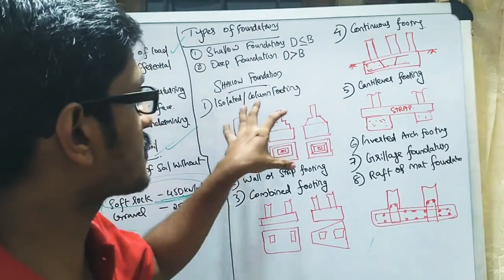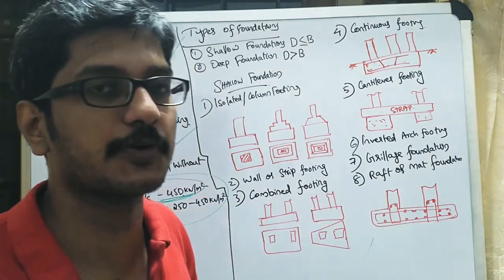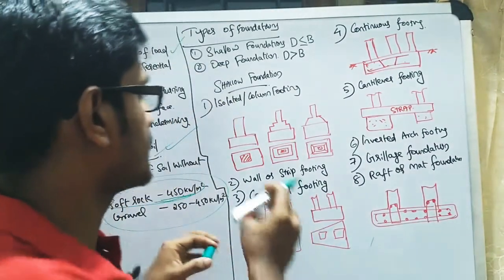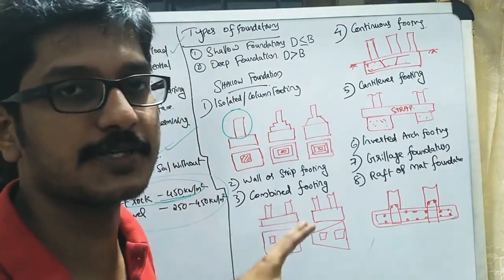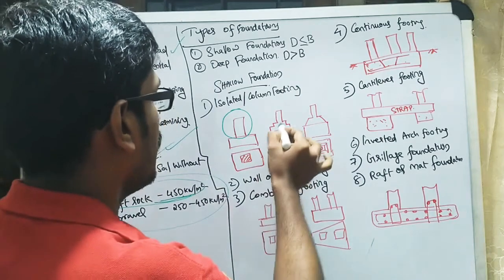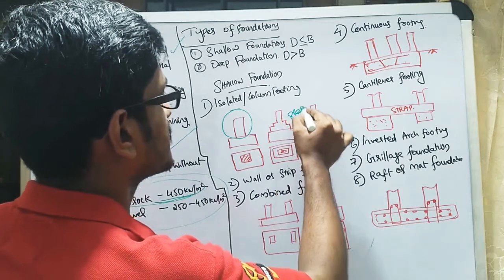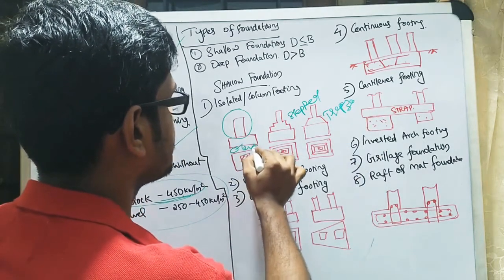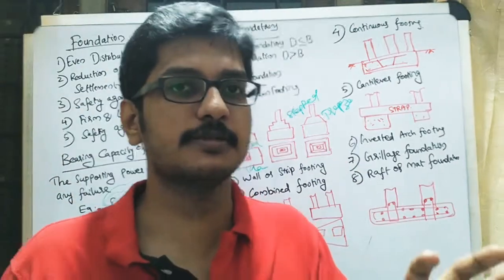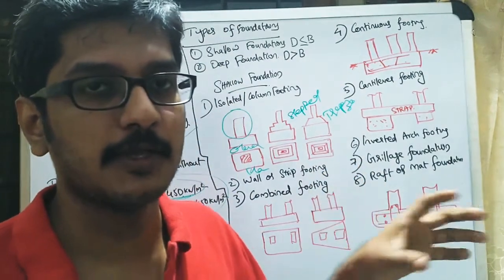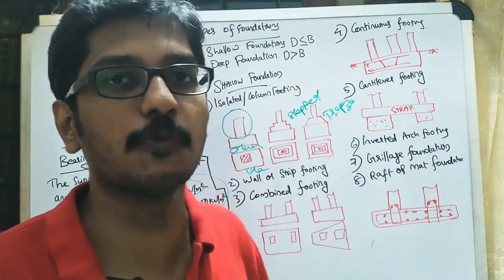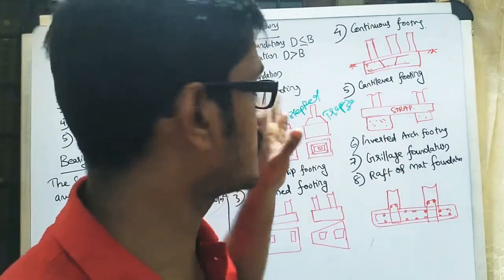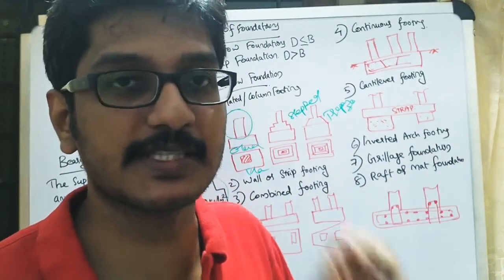The first type of shallow foundation is isolated or column footing. If only one column is supported under a footing, it is called isolated or column footing. It is used for a single column and can be of any shape — stepped or trapezoidal. The plan view is the top view and elevation is the front view. Please go through your textbook as well; sketches and diagrams are very important from an exam point of view.